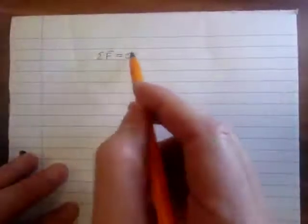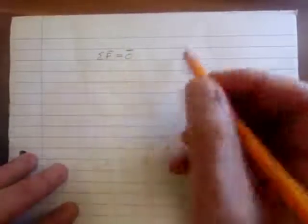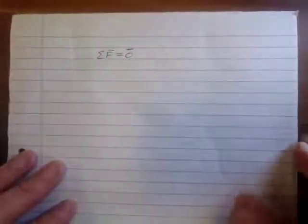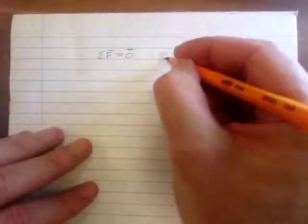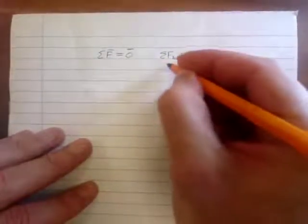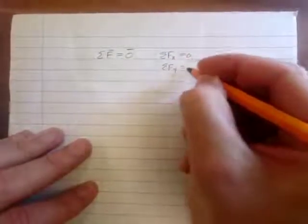We start off by the previous video. We discussed the equation of equilibrium, which just simply says that the sum of the forces is equal to zero. Now remember, this is a vector, so if we're in a two-dimensional space, then this would become sum of the forces in the X is zero, and sum of the forces in the Y is zero.